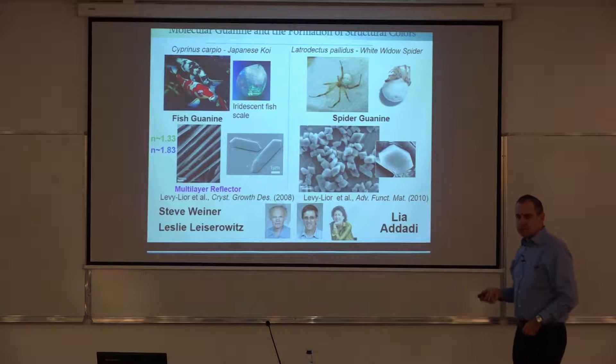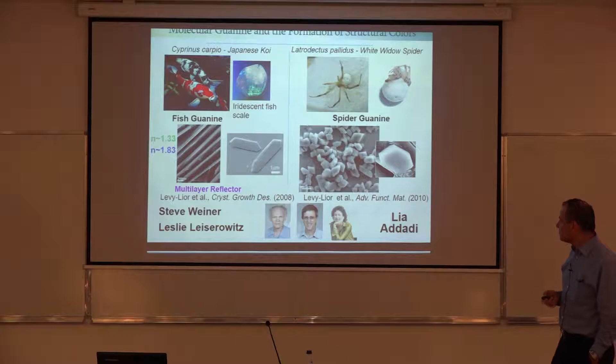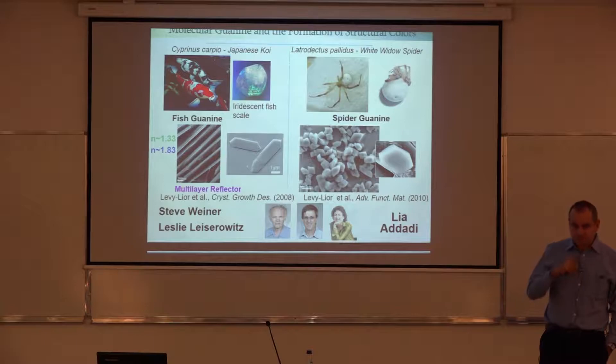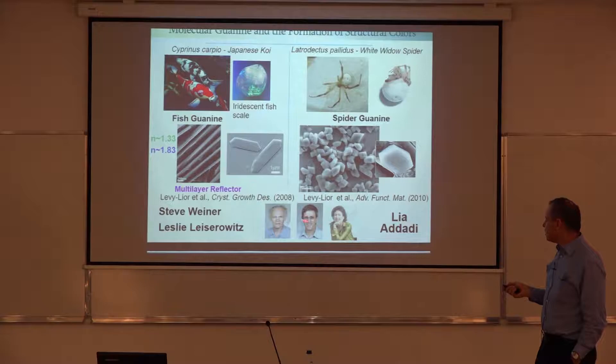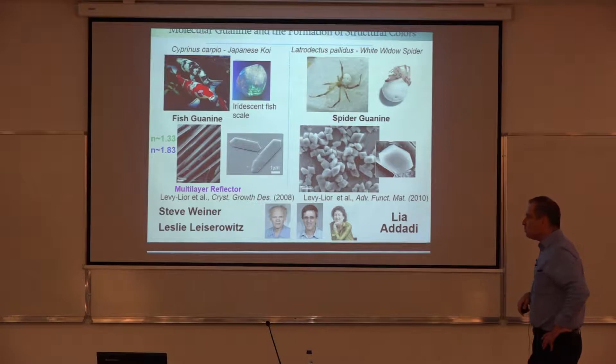In addition to the man-made molecular crystal examples already given, sometimes Mother Nature also likes molecular crystals. Here is a visually striking example known as structural colors. This is work done with Leah Duddy, Steve Weiner, and Leslie Zerowich, all at the Weizmann Institute. They became interested in a molecular solid based on guanine — looking at a fish, in this case the Japanese koi fish, whose scales are iridescent.